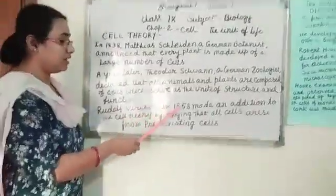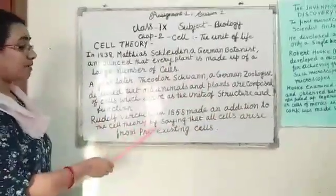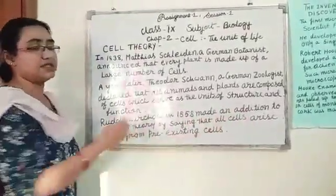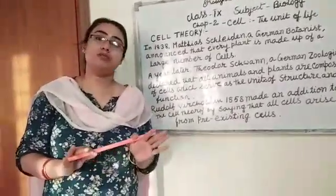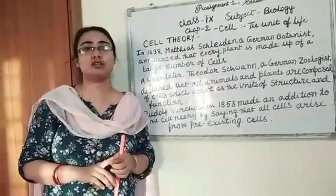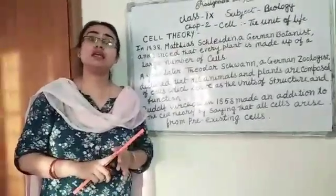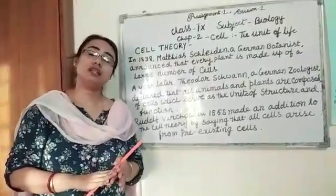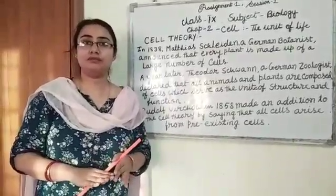Rudolf Virchow, in 1858, made an addition to the cell theory by saying that all cells arise from pre-existing cells. So, the cell theory states three major points: Number 1, the cell is the smallest unit of structure of all living things. Number 2, the cell is the unit of function of all living things. Number 3, all cells arise from pre-existing cells. That's it for today. Thank you.